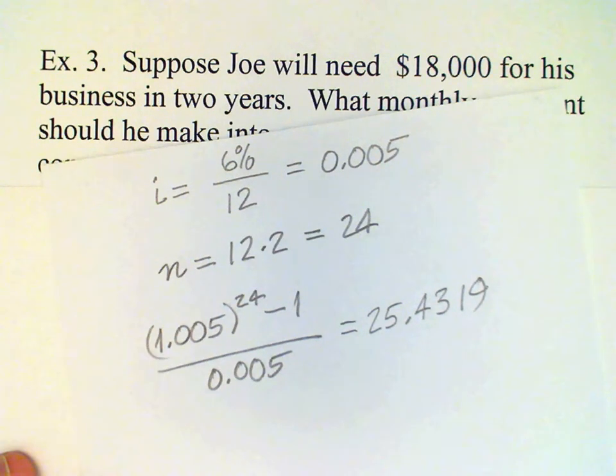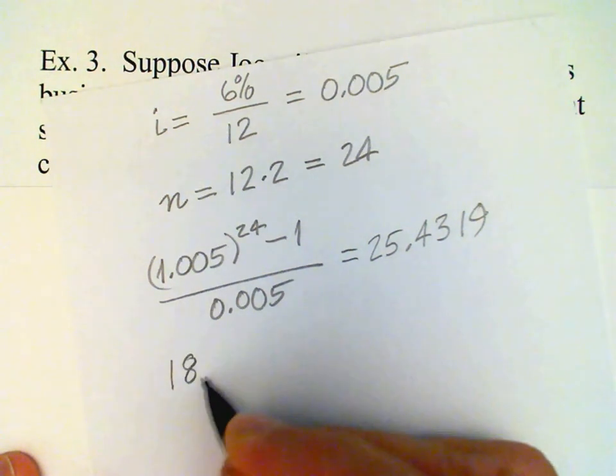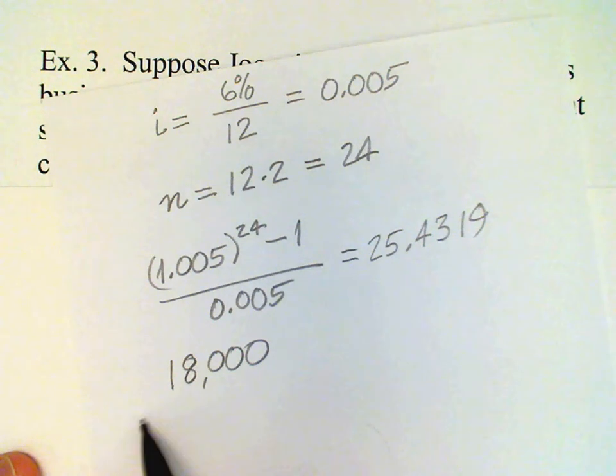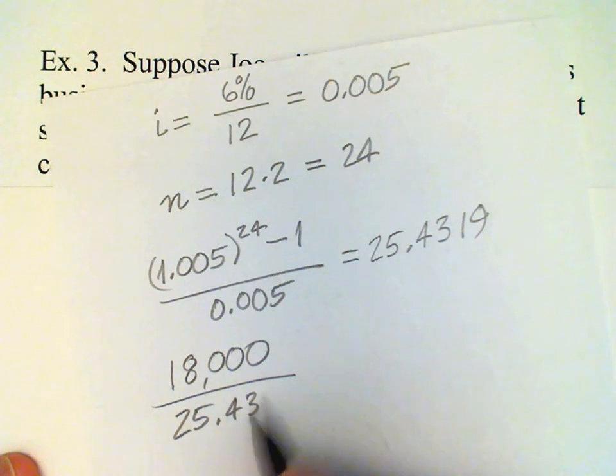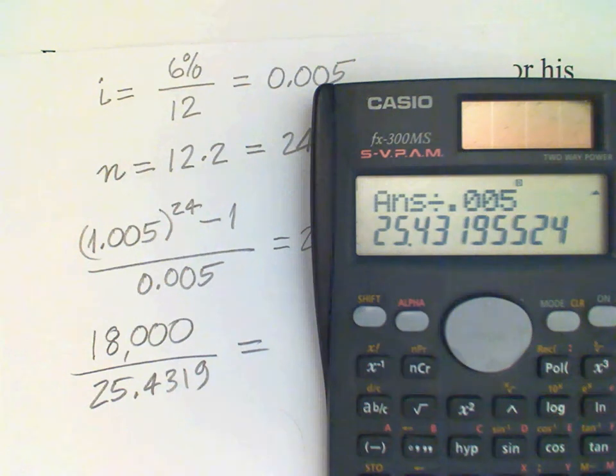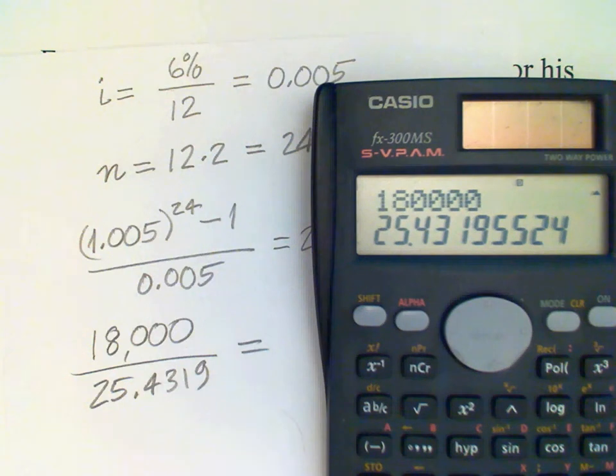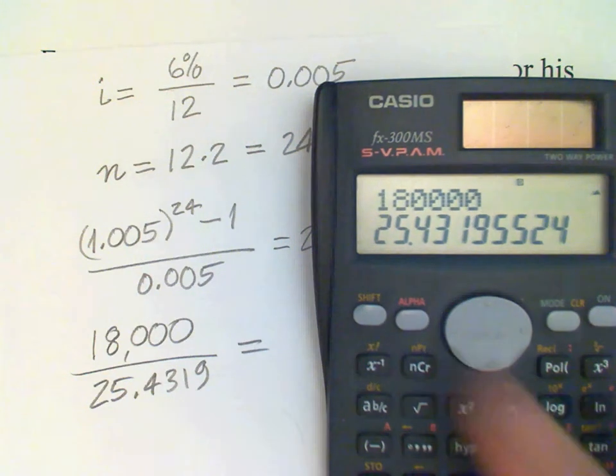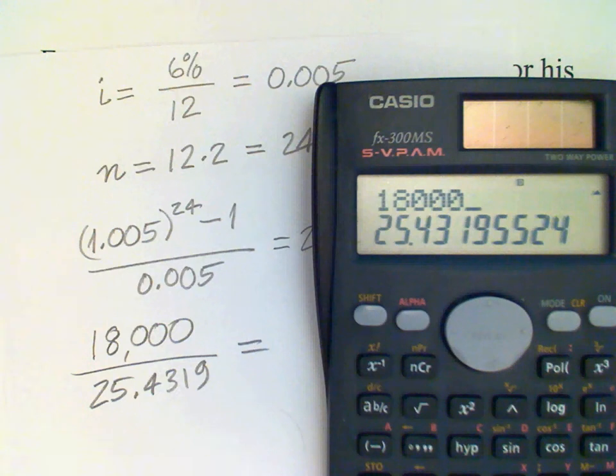So there's the annuity factor and then to get the payment all we have to do is divide the desired amount by that annuity factor. So I'm going to divide that by the answer that I got.